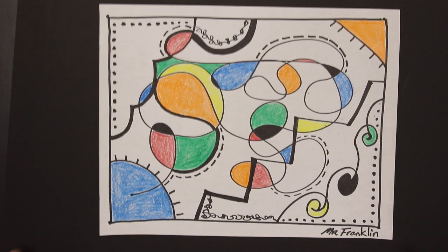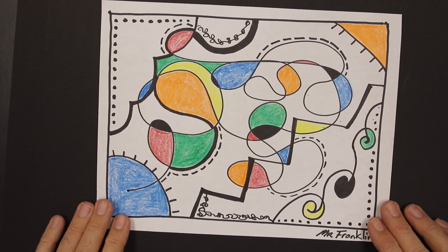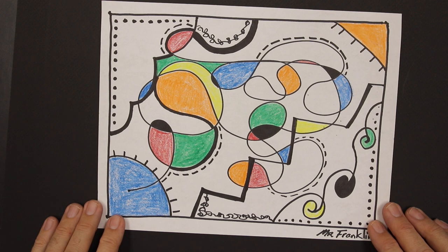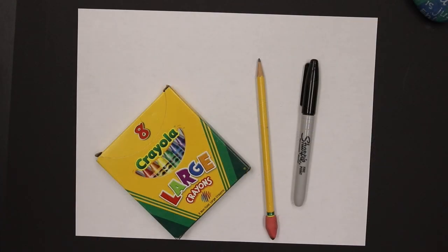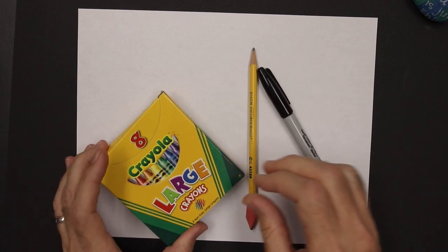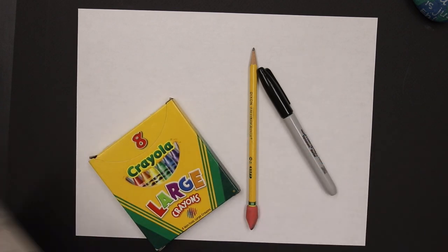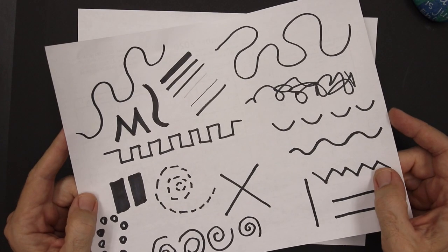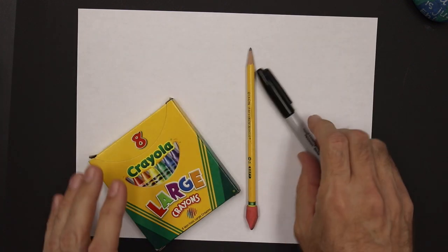For this project, we are going to create an abstract piece of artwork using line. Different types of line. We're also going to use some color here and there. But the main focus of this project is line. Here's what you're going to need for this project. I'm going to need a pencil, a pen, a marker, and some crayons. First step, what we're going to do is we're going to make sure we have our practice page of all our lines so we have that handy to get ideas from.